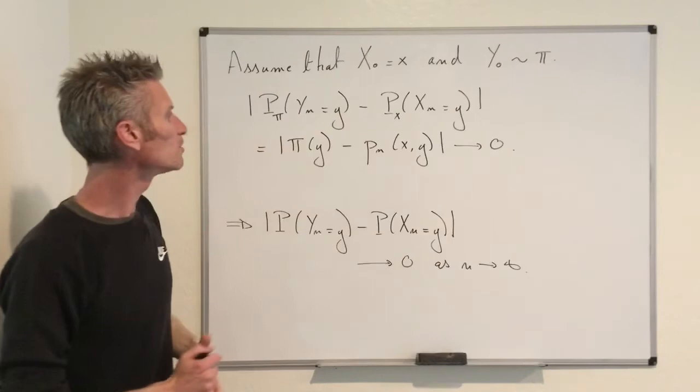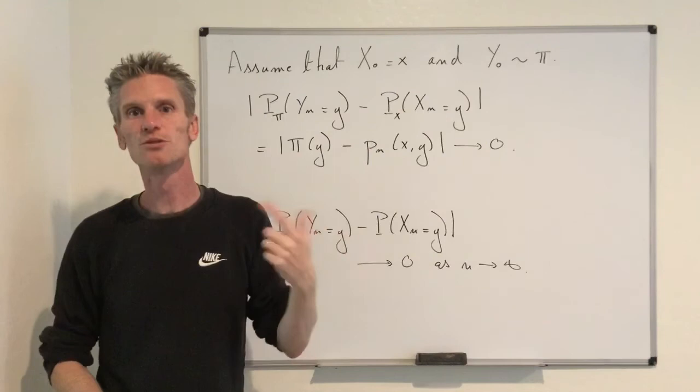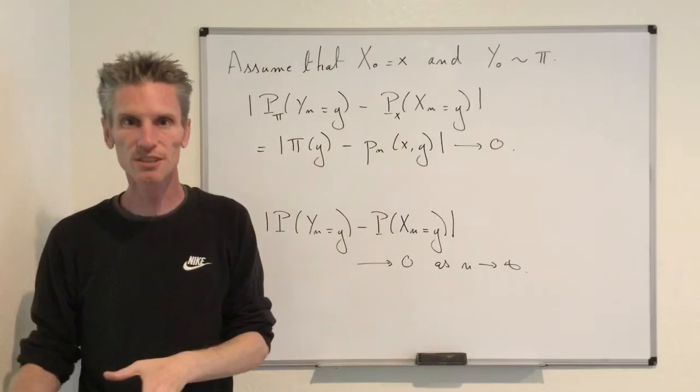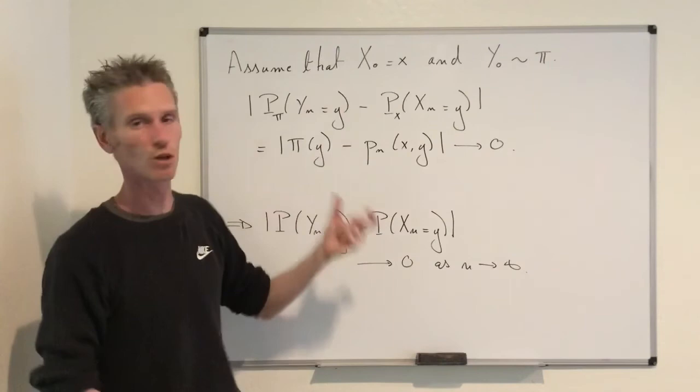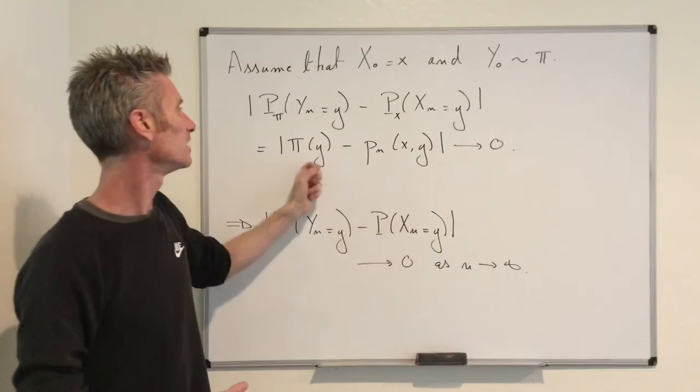That concludes the proof. In the next videos I will give examples of applications of this theorem, and I will also show concrete examples of how to compute the period of a Markov chain using the directed graph representation. By looking at examples where the period is not equal to 1, I will also show that this convergence is not always true when the period is different from 1.